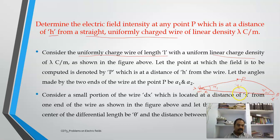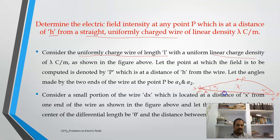What is the minimum value of alpha? The minimum value of alpha 1 will be 0, and the minimum value of alpha 2 will also be 0. The maximum values of alpha 1 and alpha 2 can be 90 degrees. Instead of considering the entire portion of length l, I will consider just a small portion of the wire, compute the electric field due to this small portion at point P, and then integrate over the entire length of the wire.